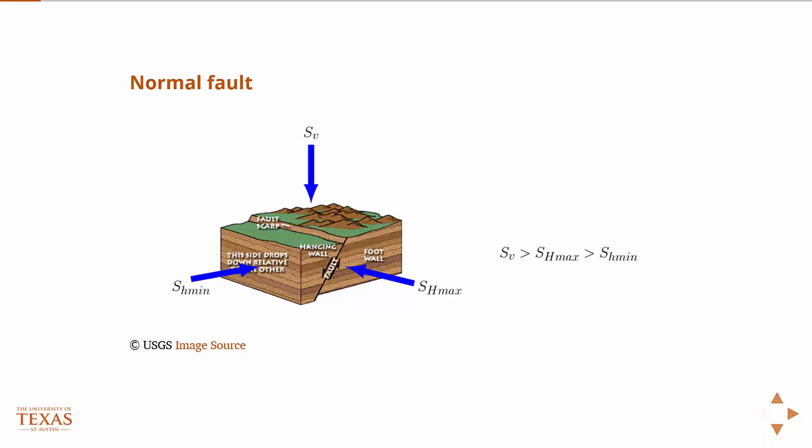If the vertical stress, which remember, stress multiplied by an area and you have force, so you can think of the vertical force as such to accommodate hanging wall motion in the same direction as gravity, right? And then the other two.